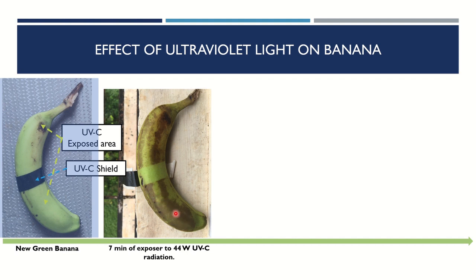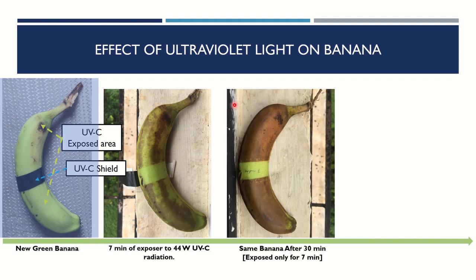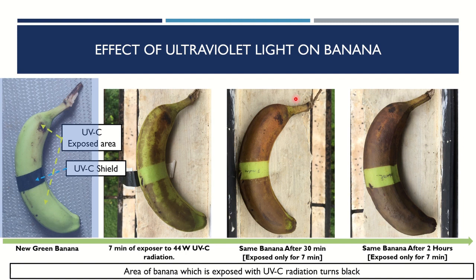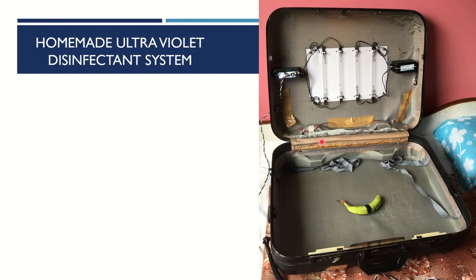After seven minutes of exposure with 44 watts of UVC radiation, you can see dead cells appearing in the exposed area. The exposure was done only once for seven minutes, and just after those seven minutes this was the condition. The same banana without any further exposure, after two hours, became even more black. So overall, the area of the banana exposed to UVC radiation turns black — confirming the germicidal effect.